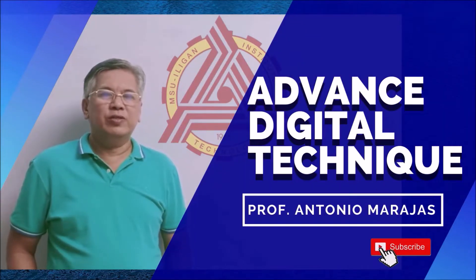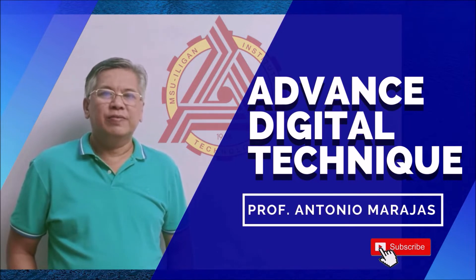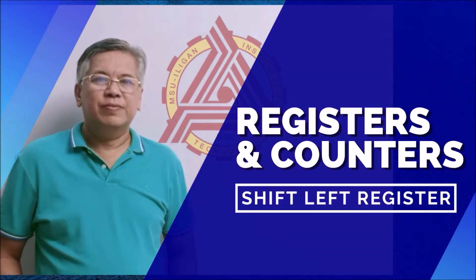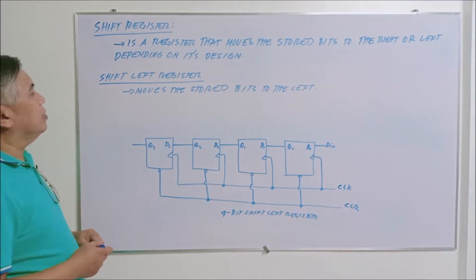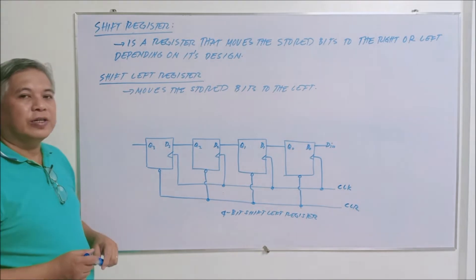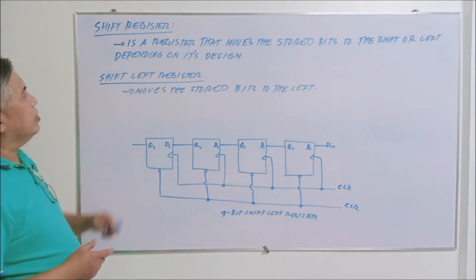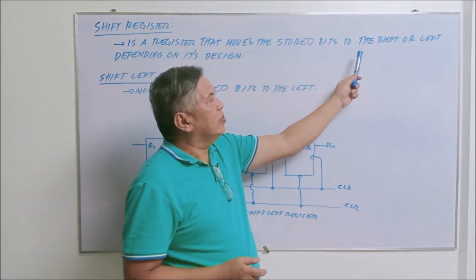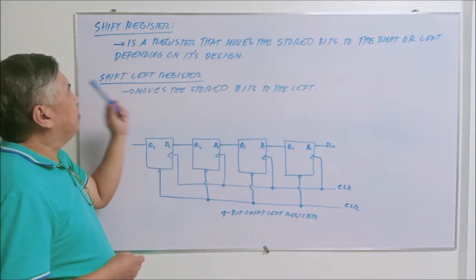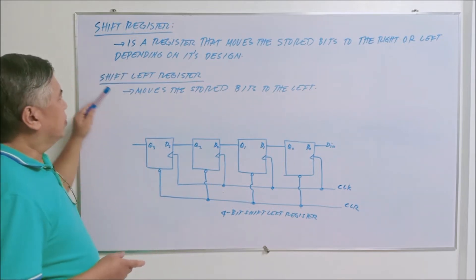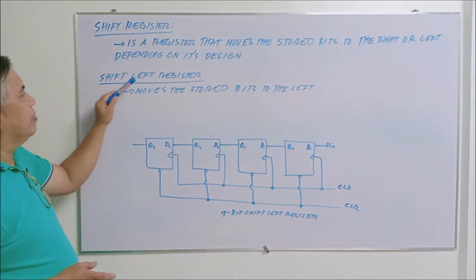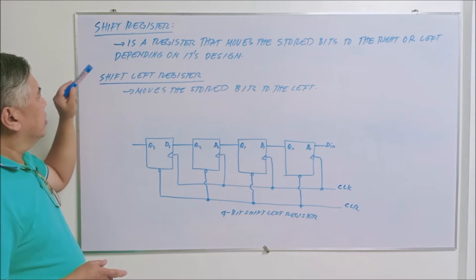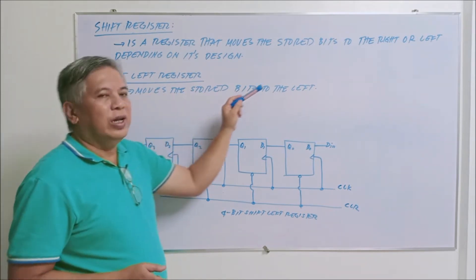This is Professor Antonio S. Marajas, and this is Advanced Digital Techniques. Another type of register is the shift register. A shift register is defined as a register that moves the stored bits to the left or to the right, depending on its design. What we have here is a shift left register — the shift left register moves the stored bits to the left.